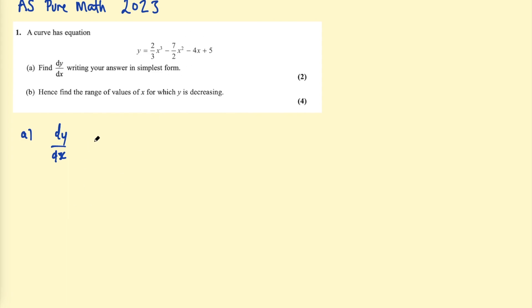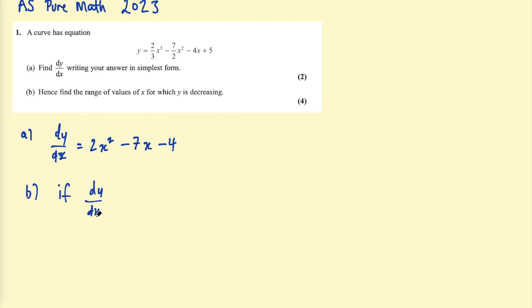So we differentiate using the addition rule and power rule on each term. (2/3) × 3 = 2, giving 2x². For the second term, (7/2) × 2 = 7, so that's −7x. The third term, −4x, differentiates to −4. And the constant is 0. So dy/dx = 2x² − 7x − 4. Since we're looking for when y is decreasing, we set dy/dx ≤ 0: 2x² − 7x − 4 ≤ 0.